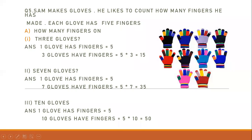You can count here: five, ten, fifteen, twenty, twenty-five, thirty, thirty-five, forty, forty-five, and fifty. These are ten gloves, each with five fingers, and the total is fifty fingers.